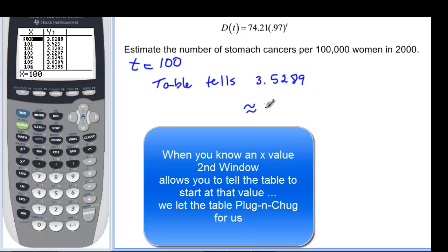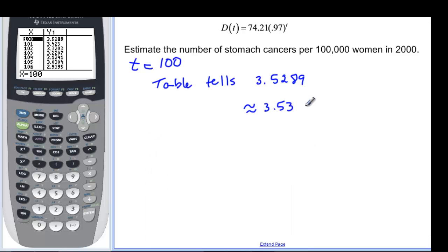Or approximately 3.53 per 100,000. So actually, it's going to be 3.53 per 100,000 deaths in 2000.